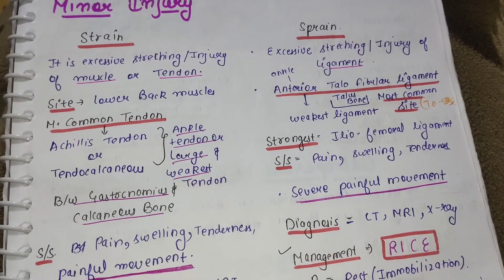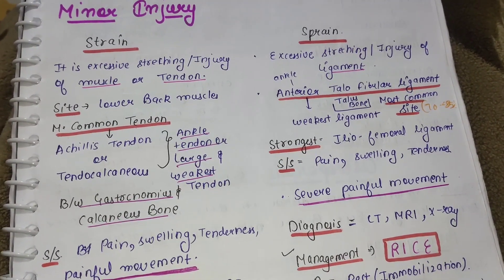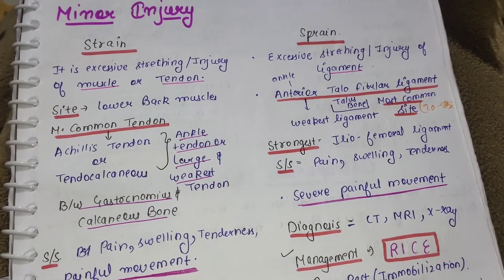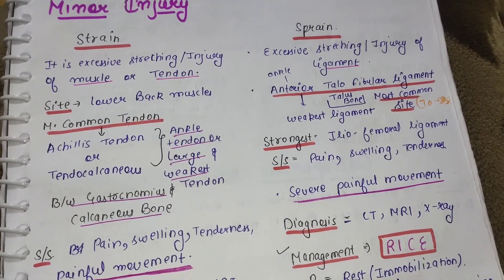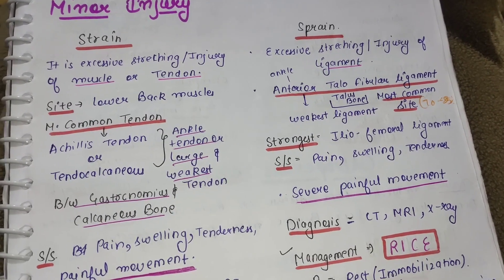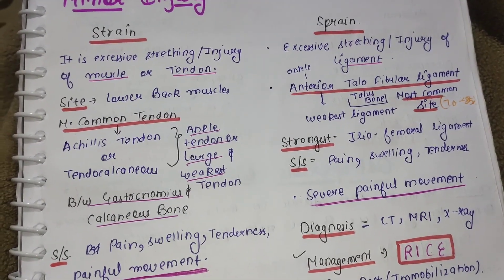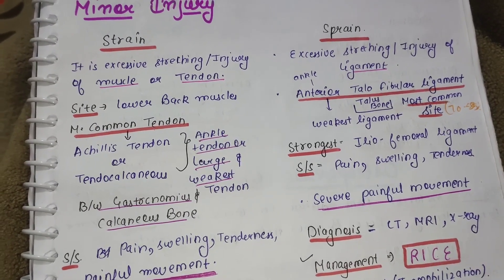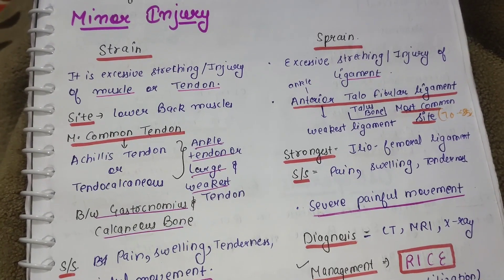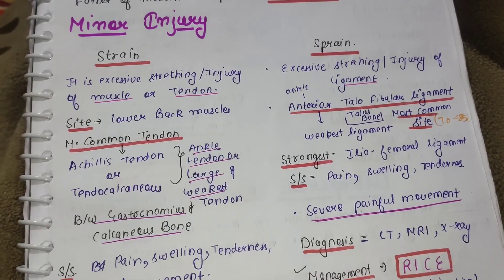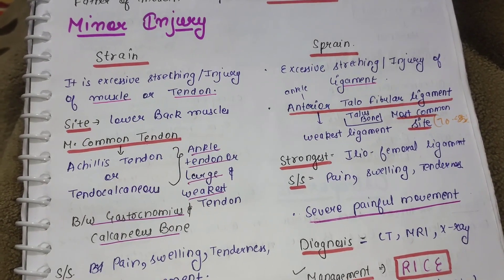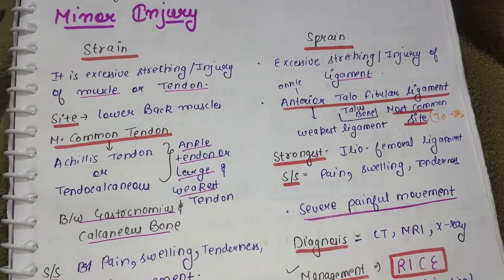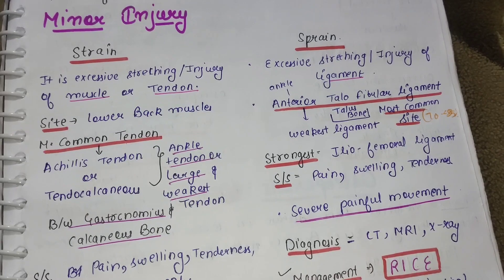Hello everyone, welcome to my YouTube channel. In this video, we will study about minor disorders of joint — strain and sprain. In my previous video, I have explained about joints and their types in detail. You can also check that video. So let's start the video. Minor injuries are strain and sprain.